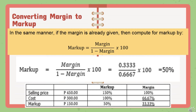Simplifying, you get one-half multiplied by 100, which gives 50%. Therefore, the selling price based on cost is 100% plus 50%, equal to 150% — which reverts back to the original selling price based on cost. We can say that when converting markup to margin or vice versa, the percentage value may change, but the amount of markup, whether based on cost or selling price, remains the same.